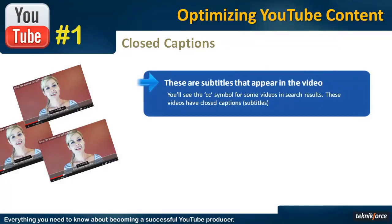You might have seen subtitles in movies, and if you've been to YouTube a lot, if you've been to some professional channels, you might have seen the little CC button which is sometimes next to a video in the search results. Then you click on that video, you see a little square box on the bottom toolbar, and when you click on it you see the subtitles for that video — the dialogue on screen. That is closed captions.